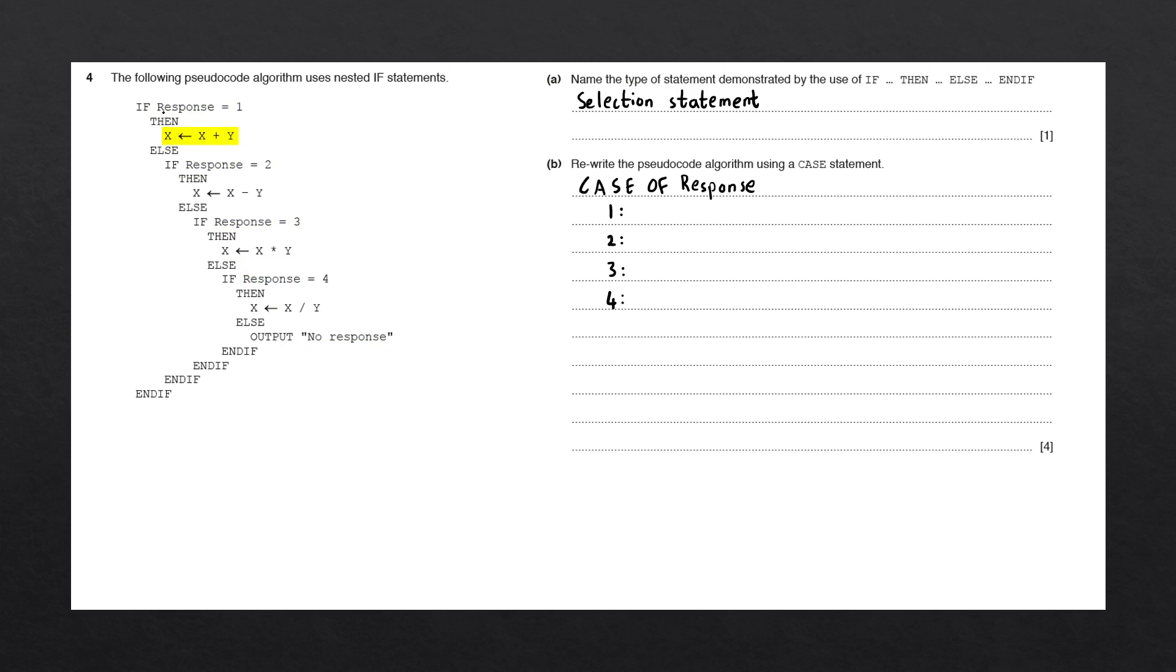So for the first one, where response is equal to one, we have x is set to x plus y. We are simply going to copy and paste this over to the answer. Where response is equal to two, we have the statement x is set to x minus y. Let's copy that over.